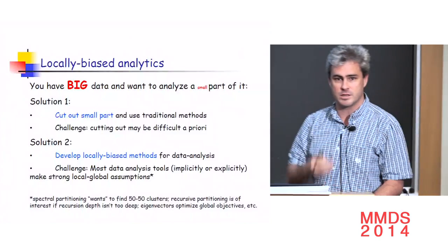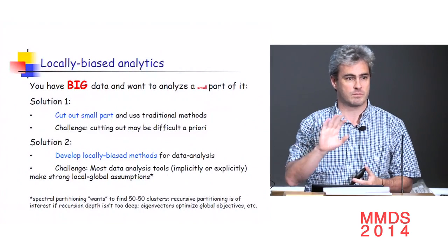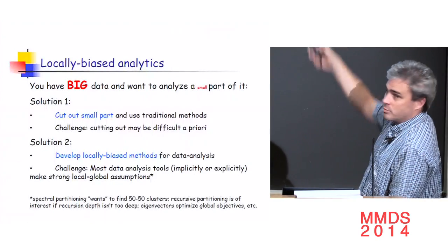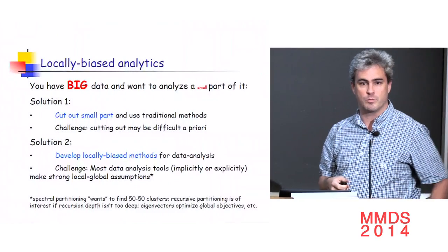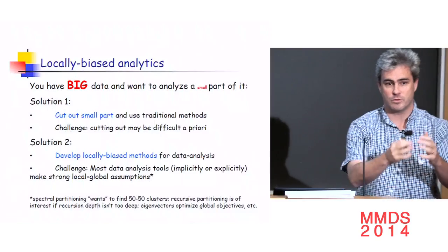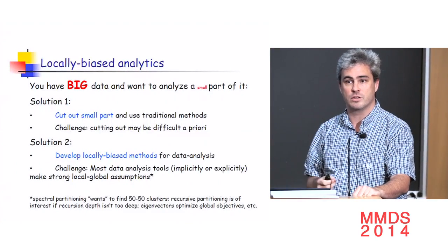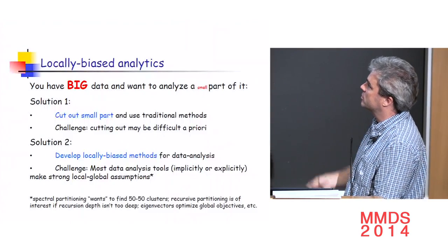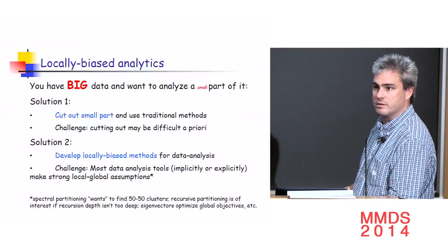More generally, say you have data that's big in some sense. Big can mean different things — because of implicit regularization effects, big can actually mean fairly modestly big. Say you have a million or billion node graph and you want to analyze a small part of it — a hundred or thousand node seed set — and you want to find a cluster around that seed node. Solution one, the more common one in practice, is to take your big graph, cut out a small part, throw out most of the stuff, and use a traditional global algorithm. The challenge is that cutting out may be difficult a priori, and you might be throwing out signal. Solution two is locally biased methods for data analysis: localized eigenvectors, local diffusions — things where you only need to look at a small part of a large data set.